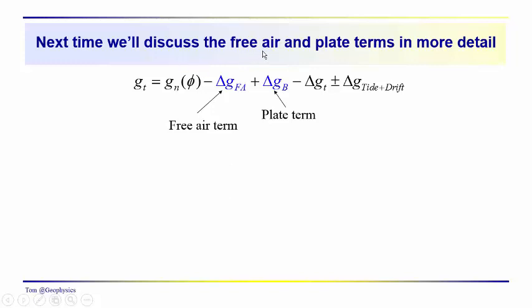And the next time, we're going to discuss the free, what we call the free air correction, or the free air term, free air effect, which is this term. It's negative because we increase elevation, we decrease the acceleration due to gravity. And then, remember we talked about compensating for the material beneath your feet, beneath your observation point, and the datum, whatever datum it is that you're using. And that's usually a two-term effect, and we divide it up into that of a plate and that of the topographic features superimposed on the plate. So, the next time, we're going to talk about the free air term and the plate terms in a little bit more detail. Talk to you then.